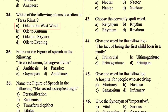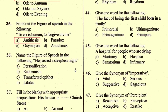Question number 35: Point out the figure of speech in 'To err is human, to forgive divine.' The right option is A, antithesis. This is said by Alexander Pope. Antithesis is a figure of speech which refers to the juxtaposition of opposing or contrasting ideas.